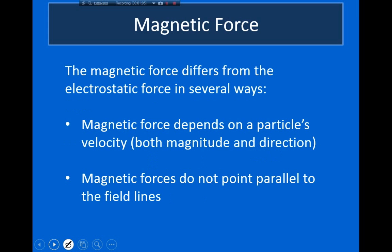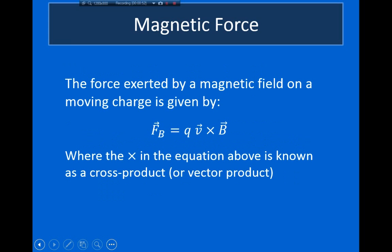The magnetic force is a very strange type of force, very different from any other force discussed so far. It differs from the electrostatic force in several important ways. First, the magnetic force depends not only on the charge of a particle, but also on its velocity — both speed and direction. Second, the magnetic force doesn't actually point in the direction of the magnetic field. The magnetic force on a charged particle is given by: F = q times the cross product of the particle's velocity and the magnetic field.